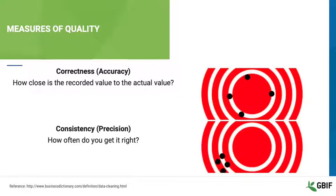Correctness, sometimes called accuracy, is how close the recorded value is to the actual real-world value. In this diagram, accuracy is how close a given dot is to the center of the target. Consistency, sometimes called precision, is how often you get it right. In this diagram, precision is how close the dots are together irrespective of how close they are to the center of the target. These are measures of how well the data gatherer was able to capture the true value being investigated. Knowing these properties of your data will help you to understand the ways in which you can and cannot clean, validate, and process the data.